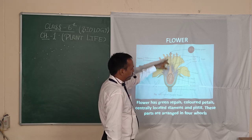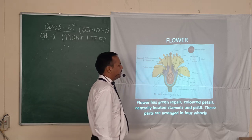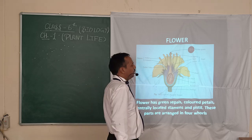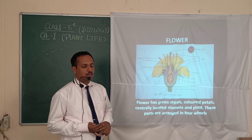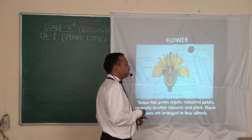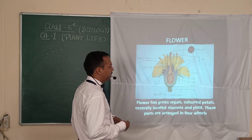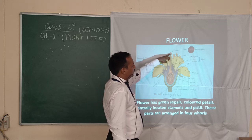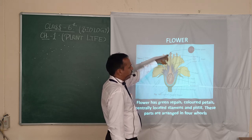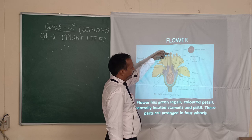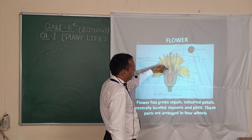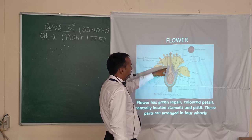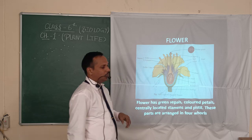The part called the pistil is the female reproductive part of the flower. It consists of stigma, style, and ovary. As you can see, the top part is the stigma, and a thin part connects it to the ovary. That thin part is called the style, and the pollen tube carries the pollen grains from the stigma down to the ovary.